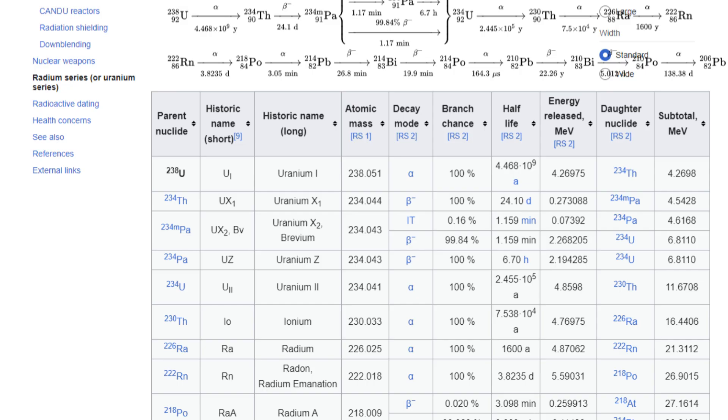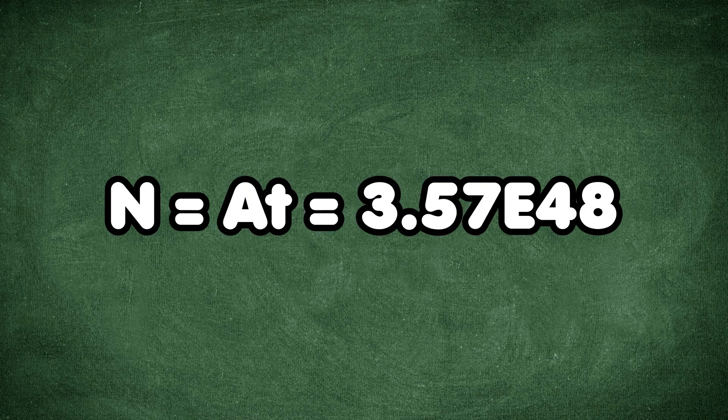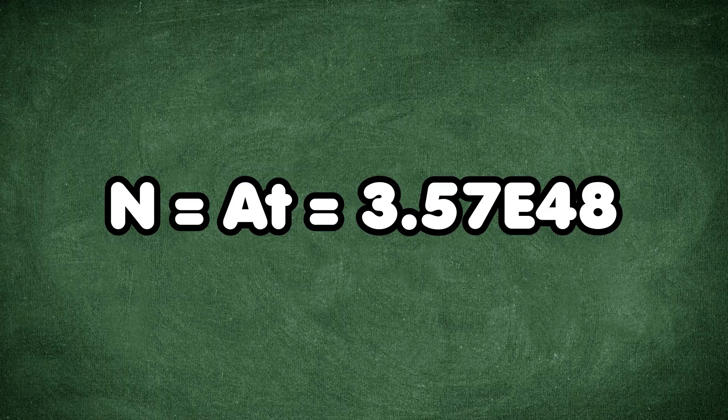So this many reactions would be needed to reach the previously calculated power output. This is our A. We also know that the decay rate of uranium is 4.5 billion years. Plug this in and we know how many atoms we need and thus how much mass this is.